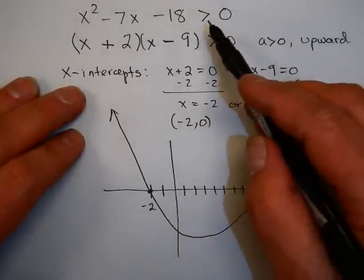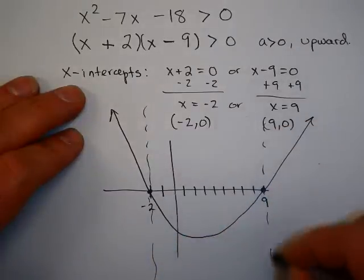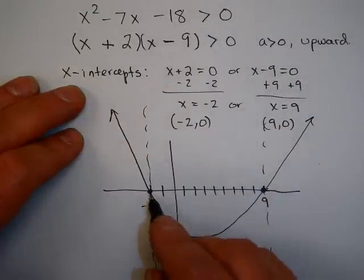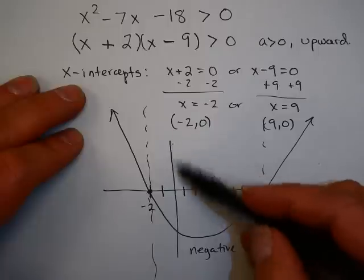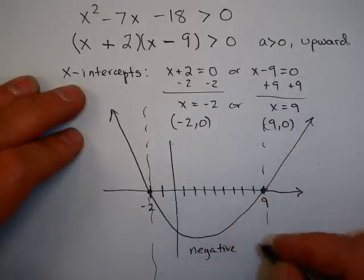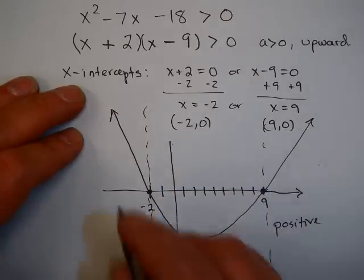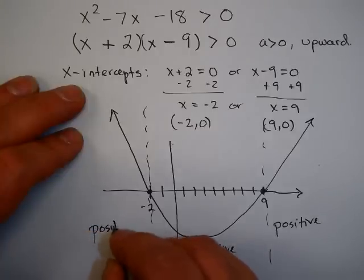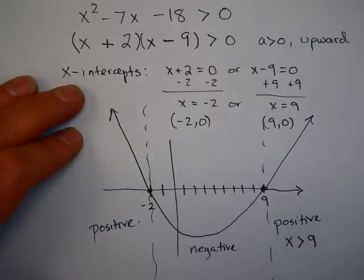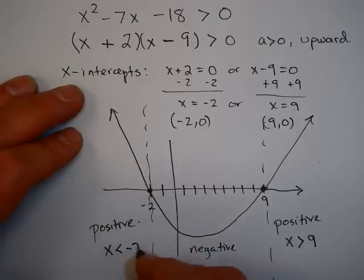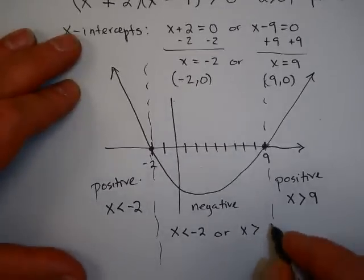Now, in this problem, I want it to be greater than 0. So I want it to be positive. Look at the graph. Where is the graph positive? Between negative 2 and 9, it is negative. The graph is below the x-axis. And the x-axis is when the function is 0. So it's below the x-axis there. But it's above the x-axis from 9 and onward. And it's above the x-axis less than negative 2. So how do I write that out? I could say x is greater than 9 and x is less than negative 2.